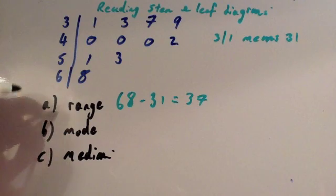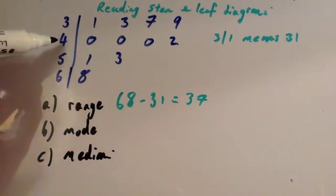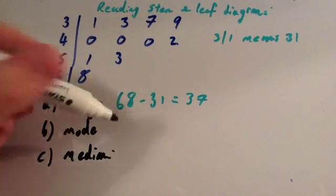Next is the mode. The mode is the most common number. Well, you can see here you've got the 0, 0, and 0 all in the same row. So that means that you've got 40, 40, and 40. So that means the most common number is 40.